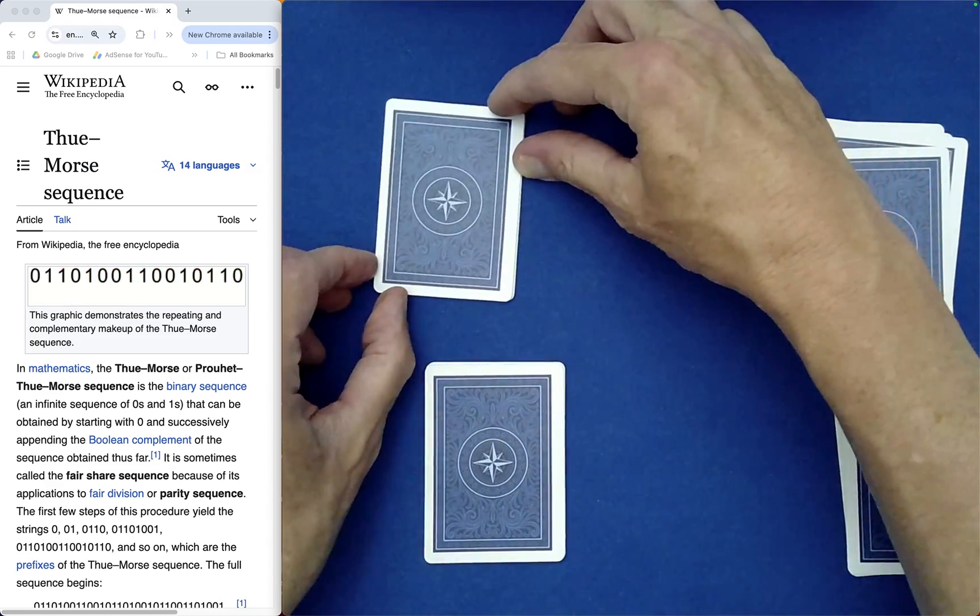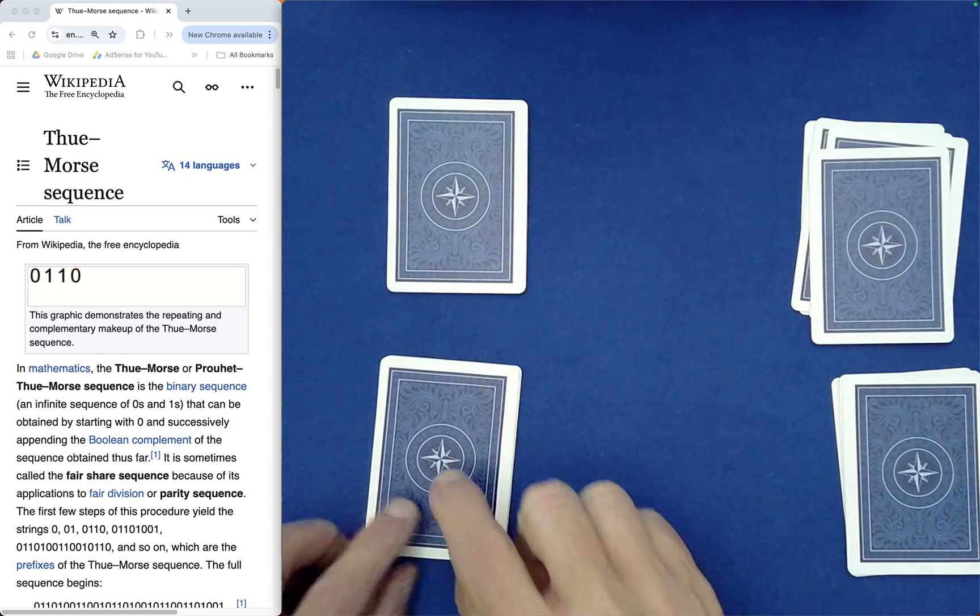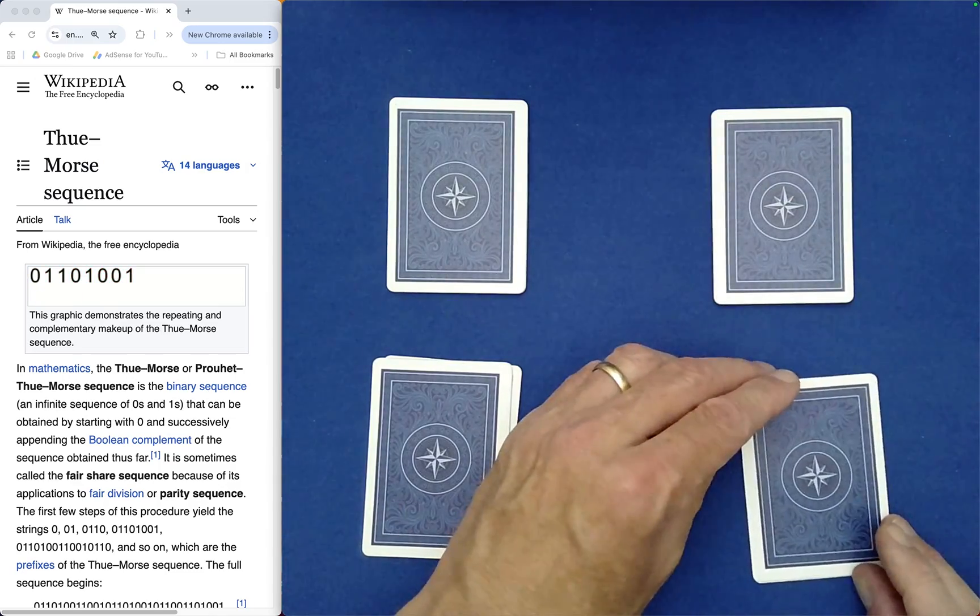So we have 4 piles of 4 cards each. So you can imagine this goes to spectator 1, 2, 3, and then 4. Very good.